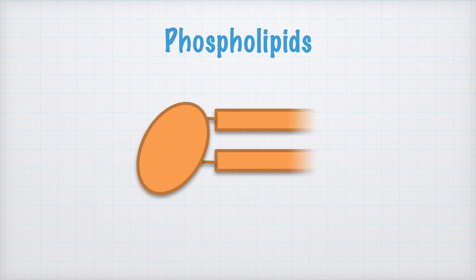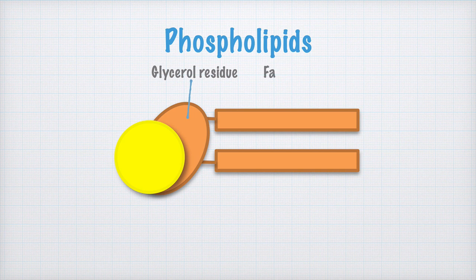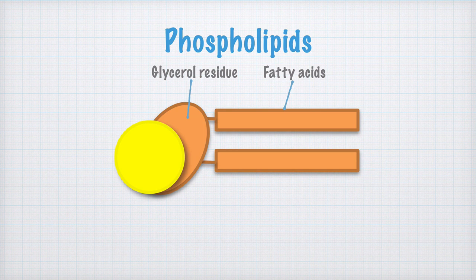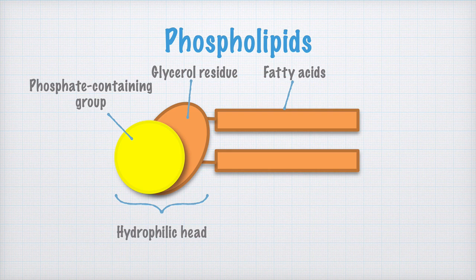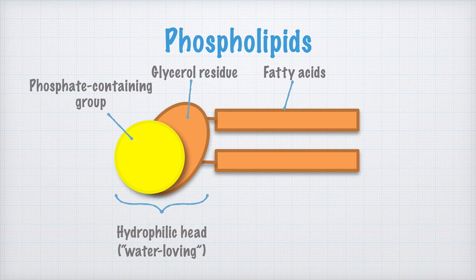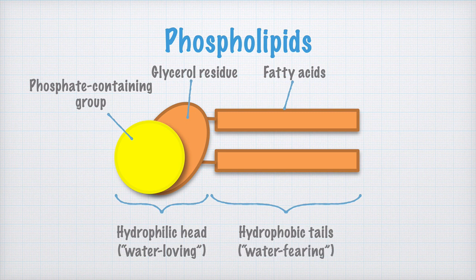Phospholipids are similar to fat molecules, in that they consist of a glycerol molecule to which fatty acids bind. But in this case, there are only two fatty acids. In the third position, there is instead a phosphate-containing group. The glycerol residue with the phosphate-containing group form what is called a hydrophilic head, that is, a part that, so to speak, loves water. This means that the head is soluble in water. The fatty acids instead form hydrophobic tails, that is, they fear water. This means that they are not soluble in water, but instead in, for example, other lipids.